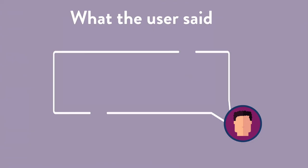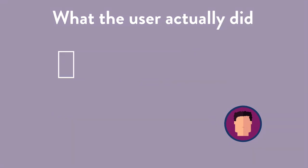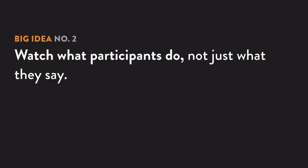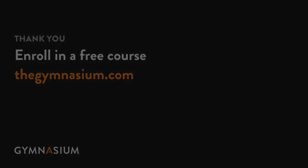You'll notice that the participant said they wanted to start with a mobile preset, only to create a mobile-ish sized box instead. This is important because it happens frequently that people say one thing and do another. Always pay attention to what people are doing, not just what they're saying. That's the basics of a usability test. Be sure to check out the rest of the series and also check out our entire course catalog at Gymnasium. Take care.